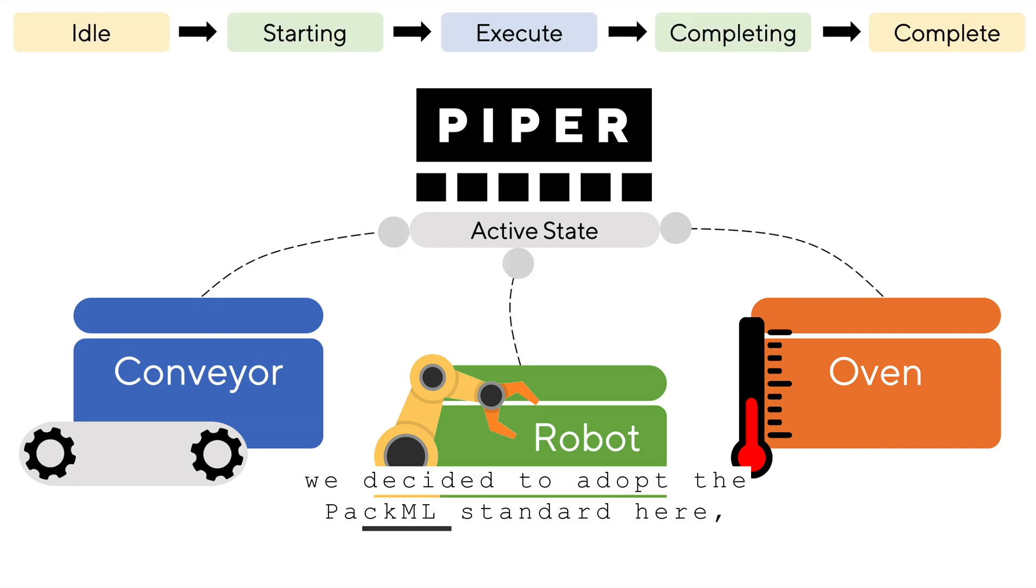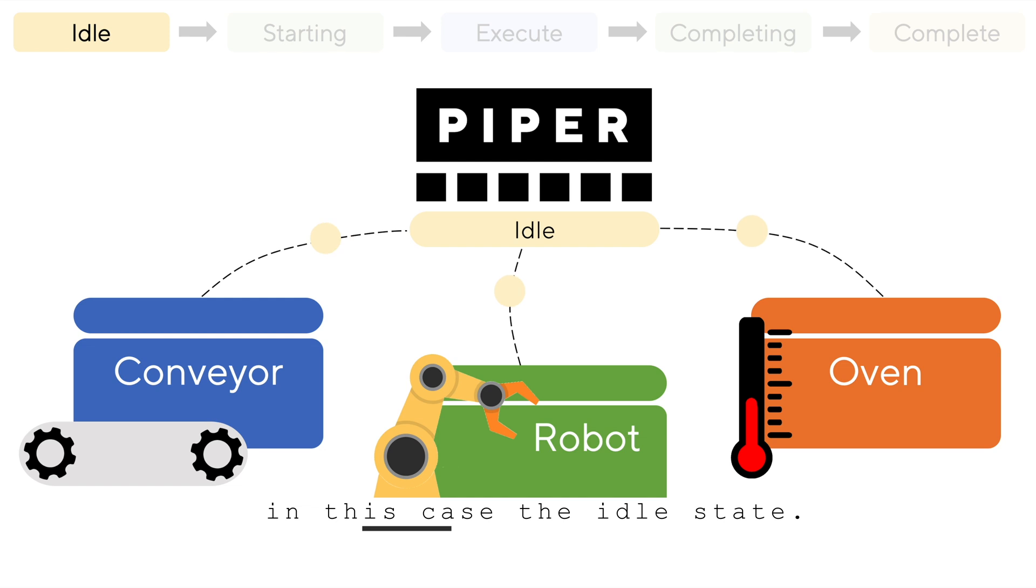We decided to adopt the PACML standard here, as it provides a universally agreed-upon framework for general machine state progression. Piper follows the PACML state flow rules, and broadcasts the current state to the rest of the components. In this case, the idle state.